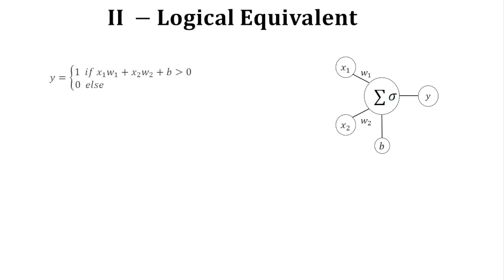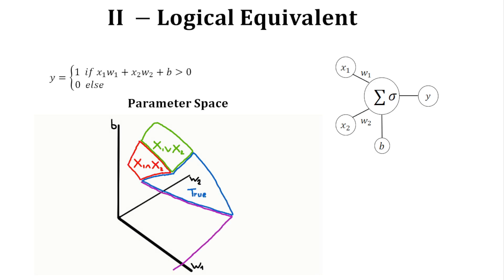So perceptrons have a logical gate that matches each of their parameter configurations. It means that if we draw the parameter space of w1, w2, b, we could see the area of each logical gate and have an idea of how they are distributed on that space. So let's explore that parameter space.